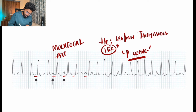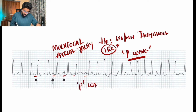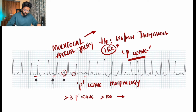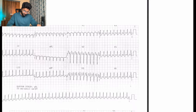For this ECG: heart rate is 126, irregular rhythm, and we can see P waves with different morphologies. Different foci are producing different kinds of atrial contractions, resulting in different P wave morphologies. To diagnose multifocal atrial tachycardia, more than three P wave morphologies should be present with a heart rate of more than 100. This condition is most commonly seen in patients with COPD.